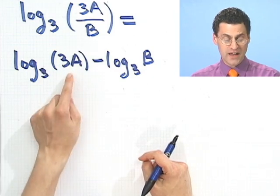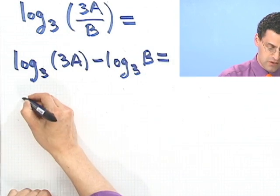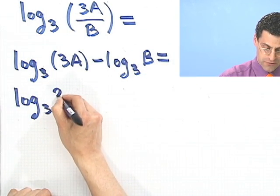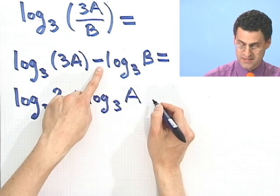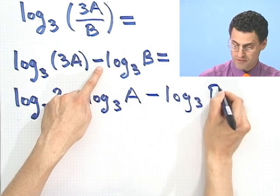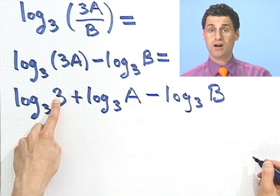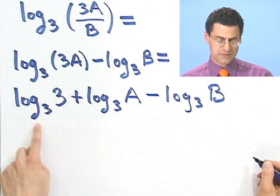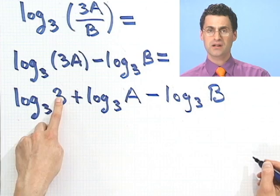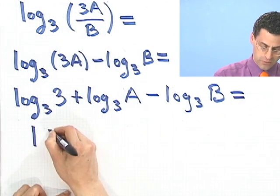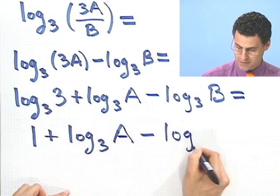What about the 3a? Well, that's actually a product. So the log of a product is the sum of logs. So in fact, this equals log base 3 of 3 plus log base 3 of a, and then I still have this term, minus log base 3 of b. But what about log base 3 of 3? Well, that's something we should know. That's the exponent I have to raise 3 to in order to make it equal 3. What exponent of 3 gives me 3? Just 1. So in fact, this could be simplified even further to 1 plus log base 3 of a minus log base 3 of b.